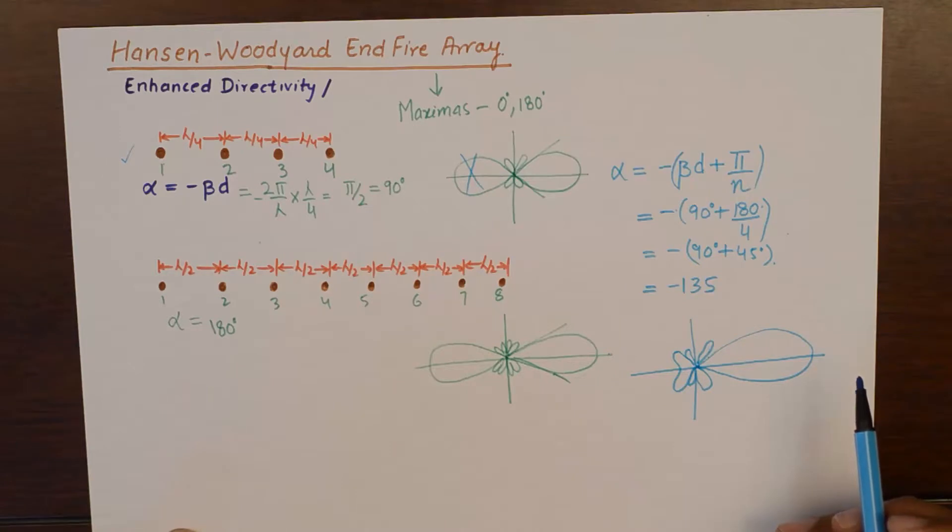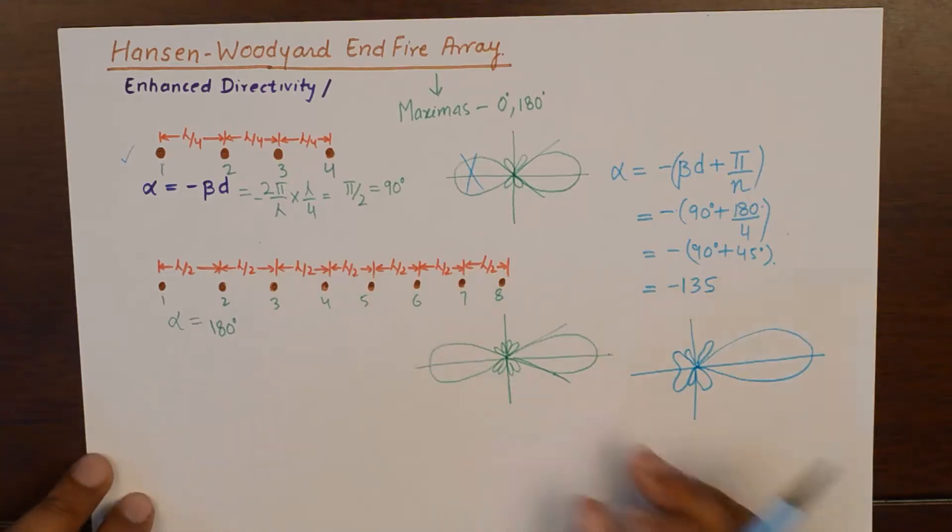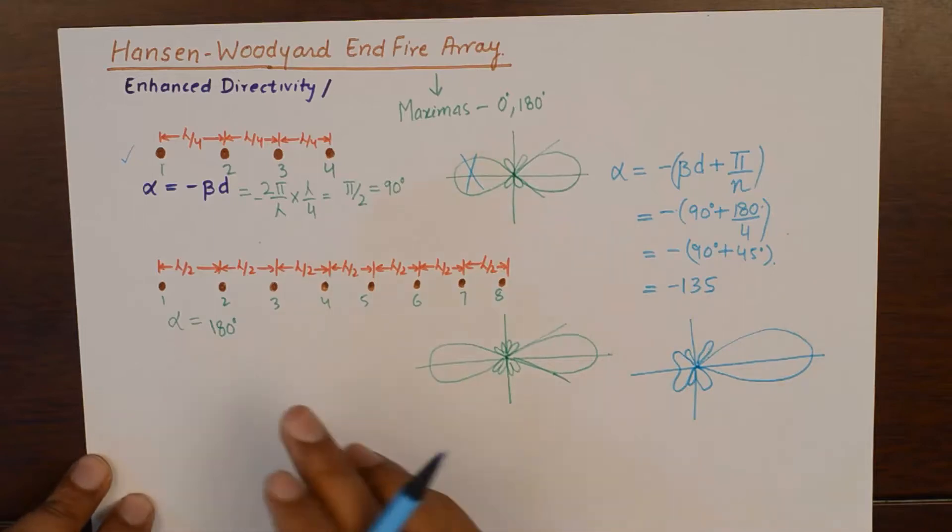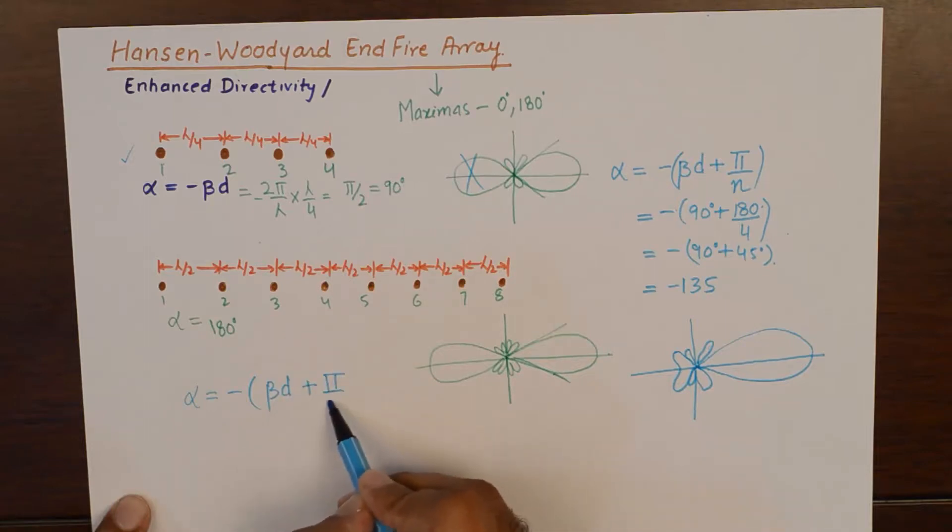But, Hansen-Woodyard end-fire array also promises an increased directivity. It could be as small as a few radians to many radians. And if we modify this end-fire array with eight elements, mathematics should be as simple as calculating new phase shift between the elements which is equivalent to beta d plus pi by n.